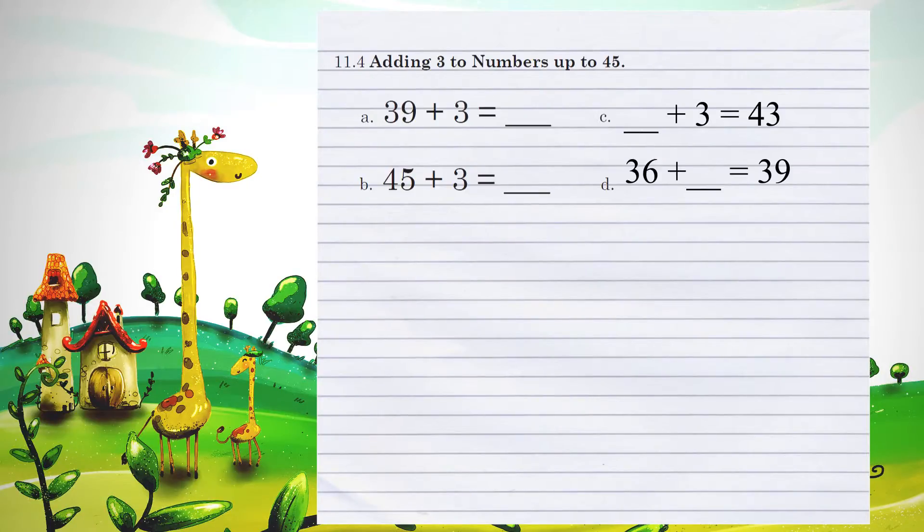Unit 11.4, adding 3 to numbers up to 45. 39 plus 3. If we look at taking the 3 and adding it to the 9 in the 1s position, 9 plus 3 is 12. We don't write down a 12. We write down the 2 and we carry the 1 over into the 10s position. So 3 plus 1 is 4 to give us an answer of 42.